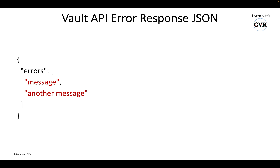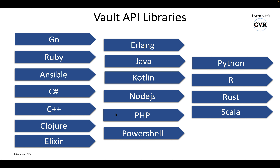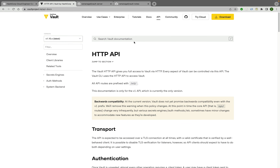Whenever a Vault API returns an error, it returns in JSON format. Now, if an application developer wants to use the Vault API, there are a bunch of API libraries available. Go and Ruby are the official libraries. Community-built libraries include Ansible, C, C++, Clojure, Elixir, Erlang, Java, Kotlin, Node.js, Python, PowerShell, and more. Any developer in the world can use the Vault API — this list is taken directly from the documentation.